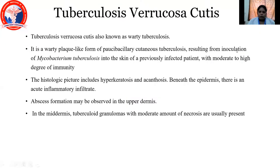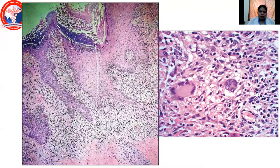Coming to tuberculosis verrucosa cutis, also called warty tuberculosis, it is a warty plaque-like form of paucibacillary cutaneous tuberculosis resulting from inoculation of Mycobacterium tuberculosis into the skin of a previously infected patient with moderate to high degree of immunity. The histological picture includes hyperkeratosis, acanthosis, and beneath the epidermis there is a collection of acute inflammatory infiltrate consisting of neutrophils. Abscess formation may be observed in the upper dermis, and in the mid dermis there are tuberculoid granulomas with a moderate amount of necrosis. This high-power view shows hyperkeratosis, acanthosis, and in the mid dermis granuloma formation, giant cells, and focal areas of necrosis.